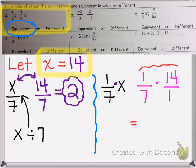So we'd have 1 times 14, which is 14. Then we'd have 7 times 1, which is 7. And 14 divided by 7 is 2.